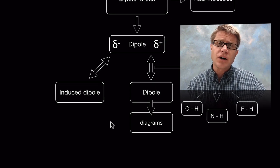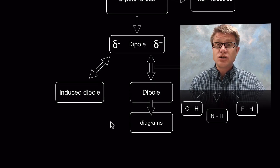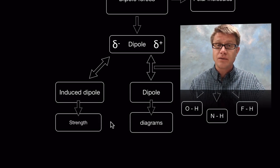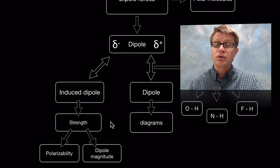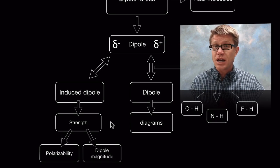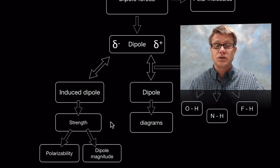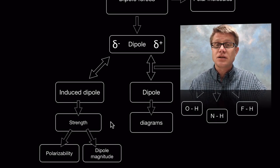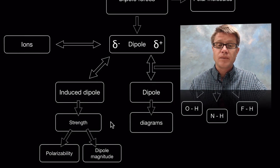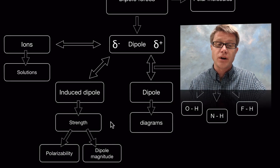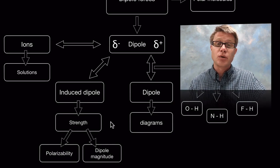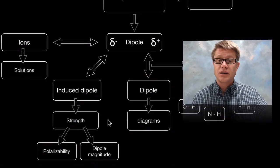We could also have an attraction between a dipole and an induced dipole — something that's not polar but can be for just a second. The strength of this force is going to be based on the polarizability, in other words how much we can make that molecule turn into a dipole, and the magnitude of the original dipole. Finally, we can have a force between a dipole and an ion, which is really important when dipoles break down solutions — for example, water breaking down salt.